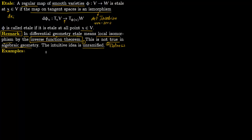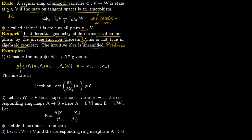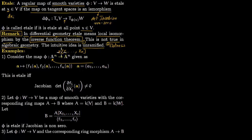Let us do some examples. The first example: say you are given a map phi from Aⁿ to Aⁿ, given by a vector (A₁, …, Aₙ) mapping to Aⁿ via n polynomials F₁, F₂, …, Fₙ, all in K[X₁, …, Xₙ]. This is a standard regular map. This map is étale if and only if you take the Jacobian of these polynomials and its determinant is non-zero. This is the standard example of étale-ness that one should always keep in mind.